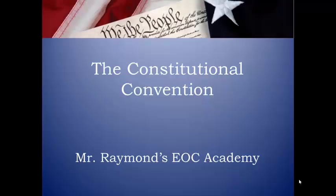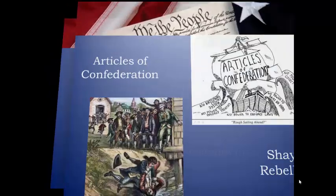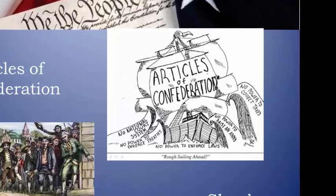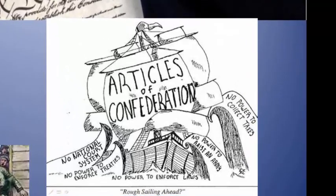Welcome back to Mr. Raymond's Civics EOC Academy, where today we're going to be talking about the Constitutional Convention in 1787. In particular, we're going to focus on how the weaknesses of the Articles of Confederation that we discussed last time were addressed by the Convention delegates.